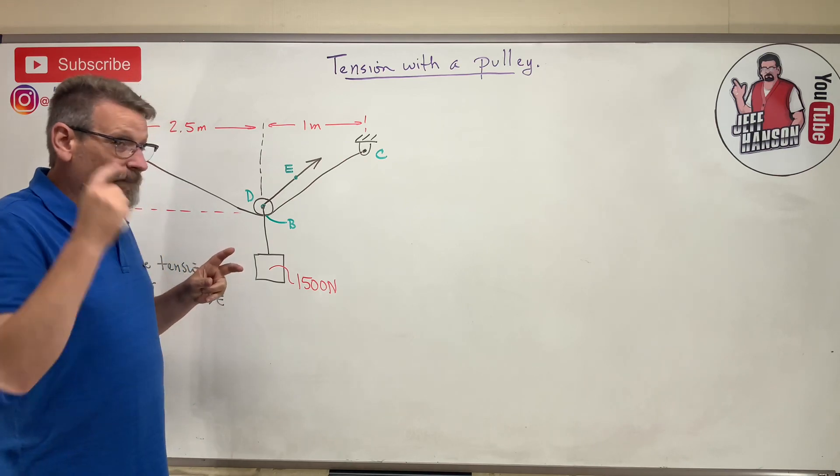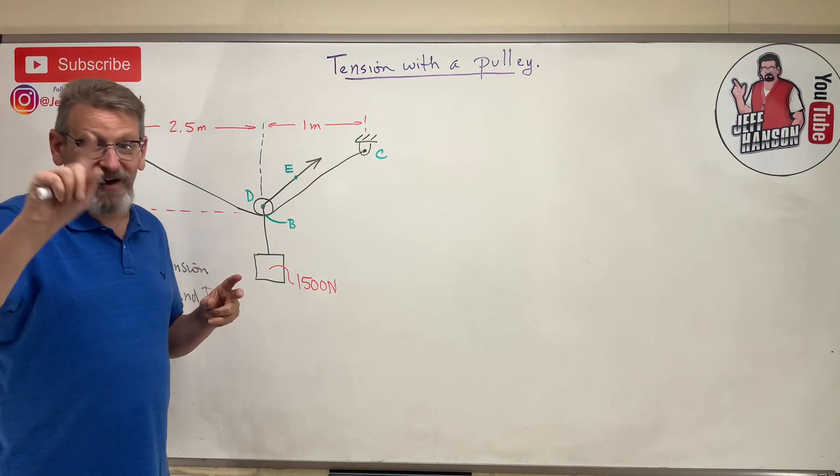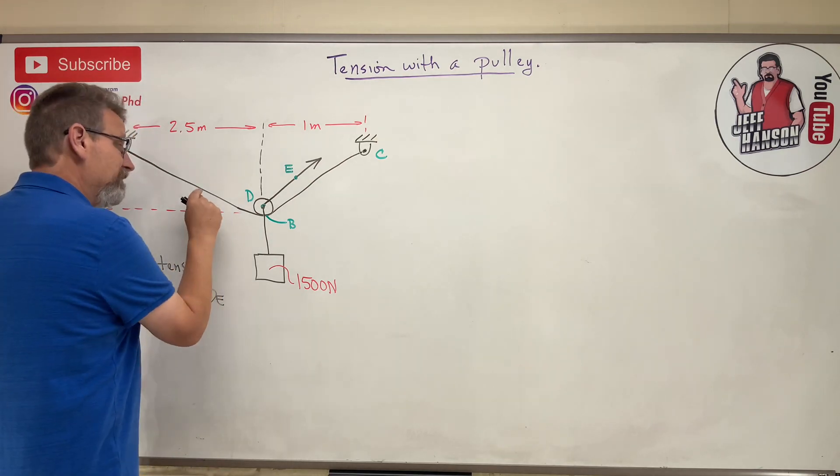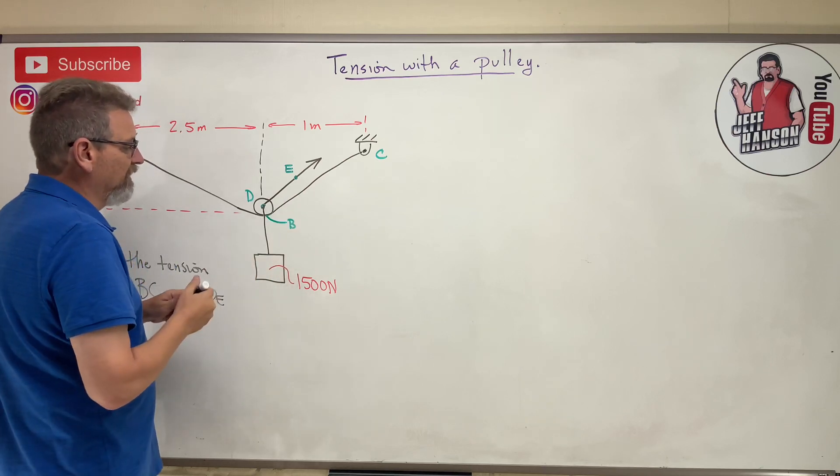Johnny Weaksauce would do that, but not us. We're like, "No wait a second, rope goes over pulley, it's the same on both sides." If that equals T, then that equals T. So what I'm gonna do again is a free body diagram.